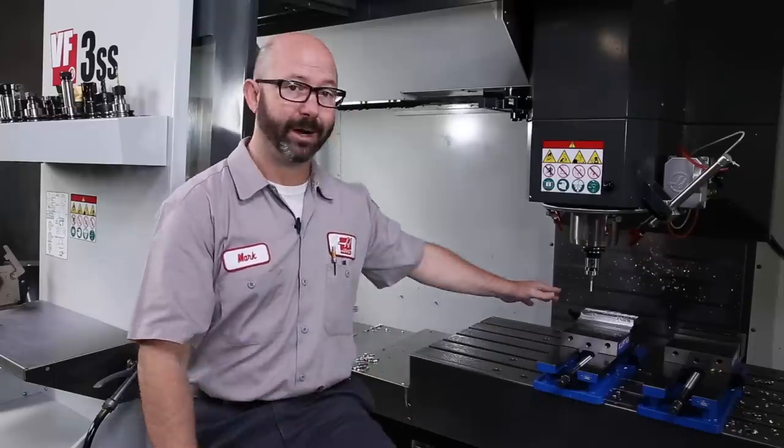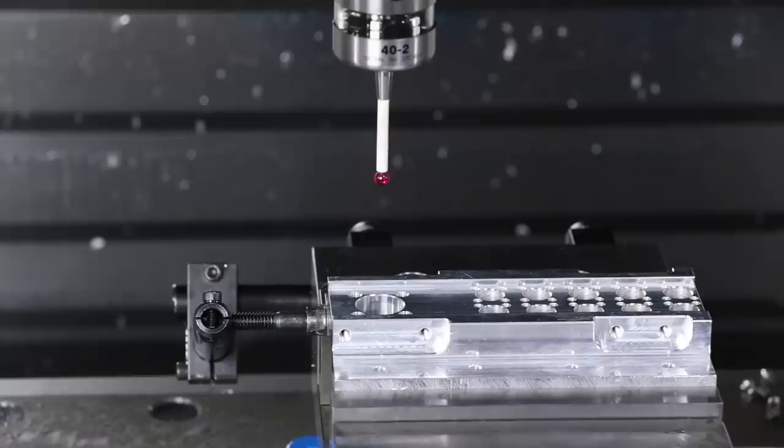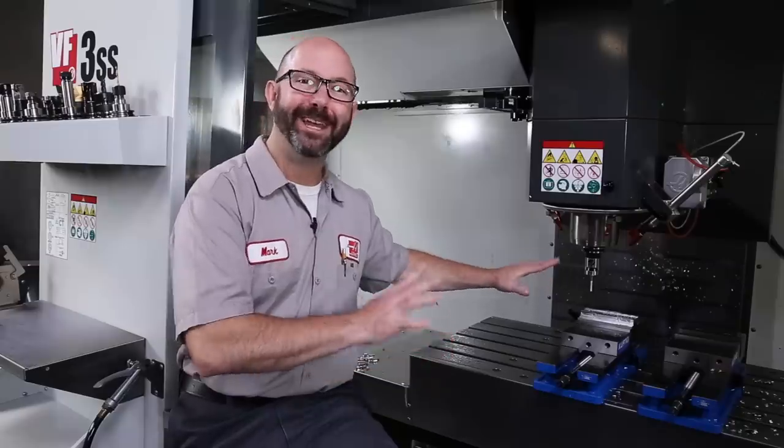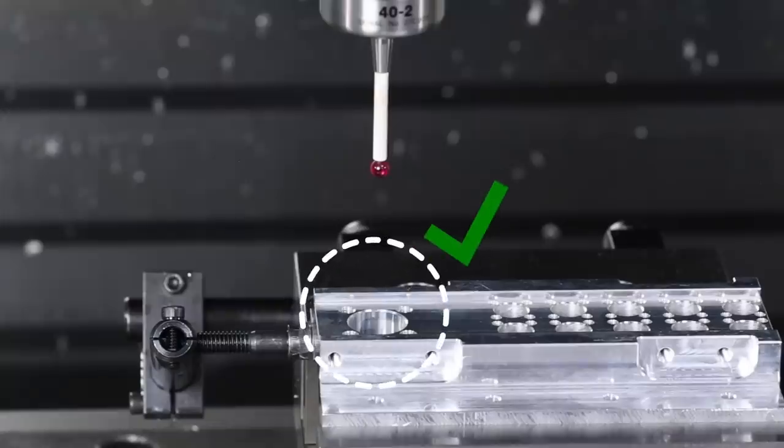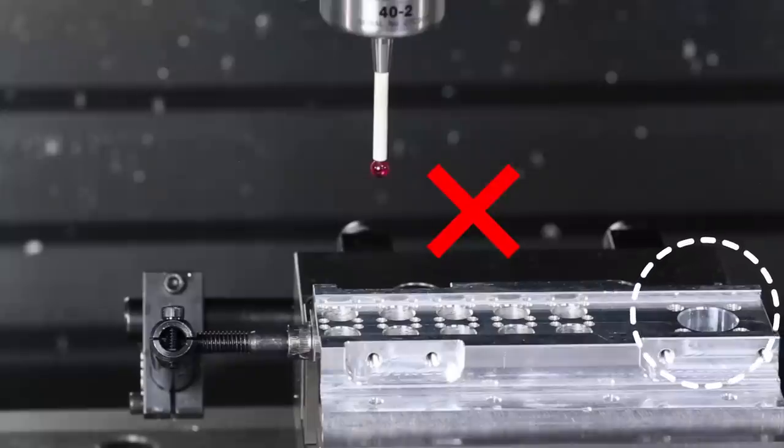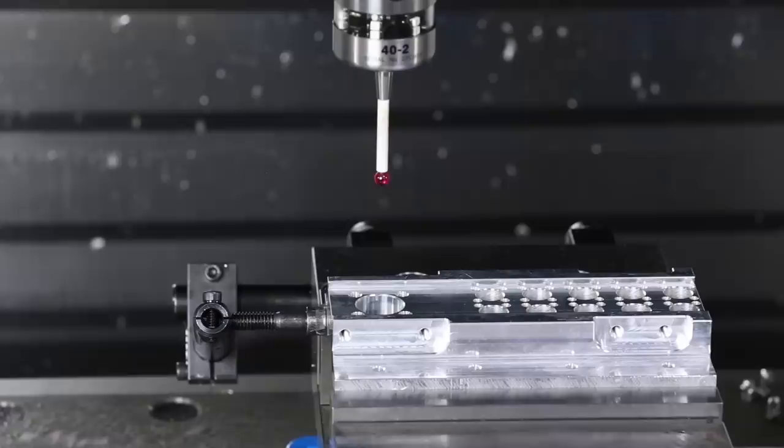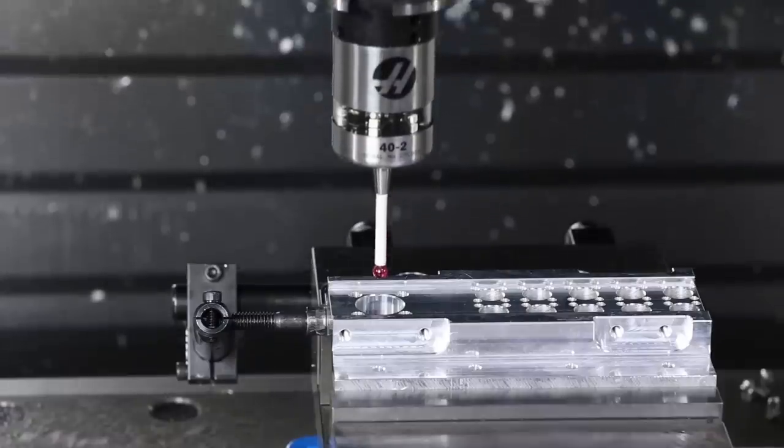So here is our part. It's a fake part, not a real part. But in this example, we need the operator to load the part with that large hole to the left. If they were to load the part with a large hole to the right, then bad things would happen. So we've written some code up here. We're going to show you this code in a minute. That's going to probe the part.